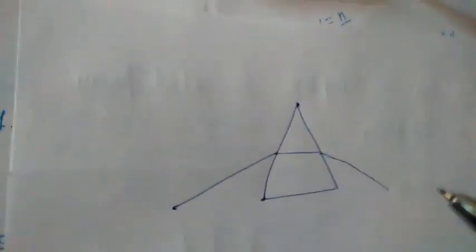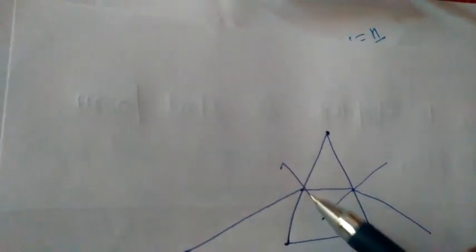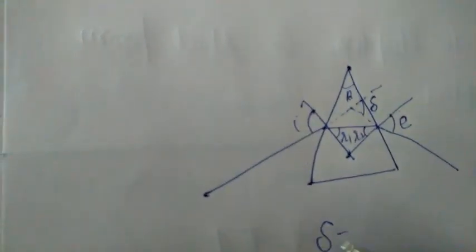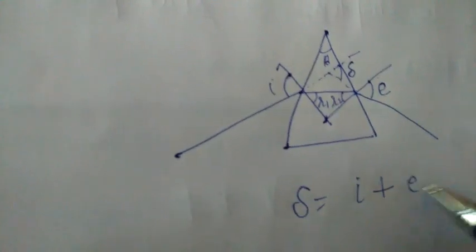If we have to obtain the refraction formula through a prism, then we can easily revise this article. Let this is a prism. This is the incident ray, this is the refracted ray, this is the emergent ray. And we draw the normal on the two surfaces. This is the angle of incidence, this is the angle of emergent. When we produce the incident ray forward and backward the emergent ray, then this is the angle of deviation. Therefore, angle on this surface is angle of refraction. Angle on this surface is angle of refraction. And this is the angle of prism.